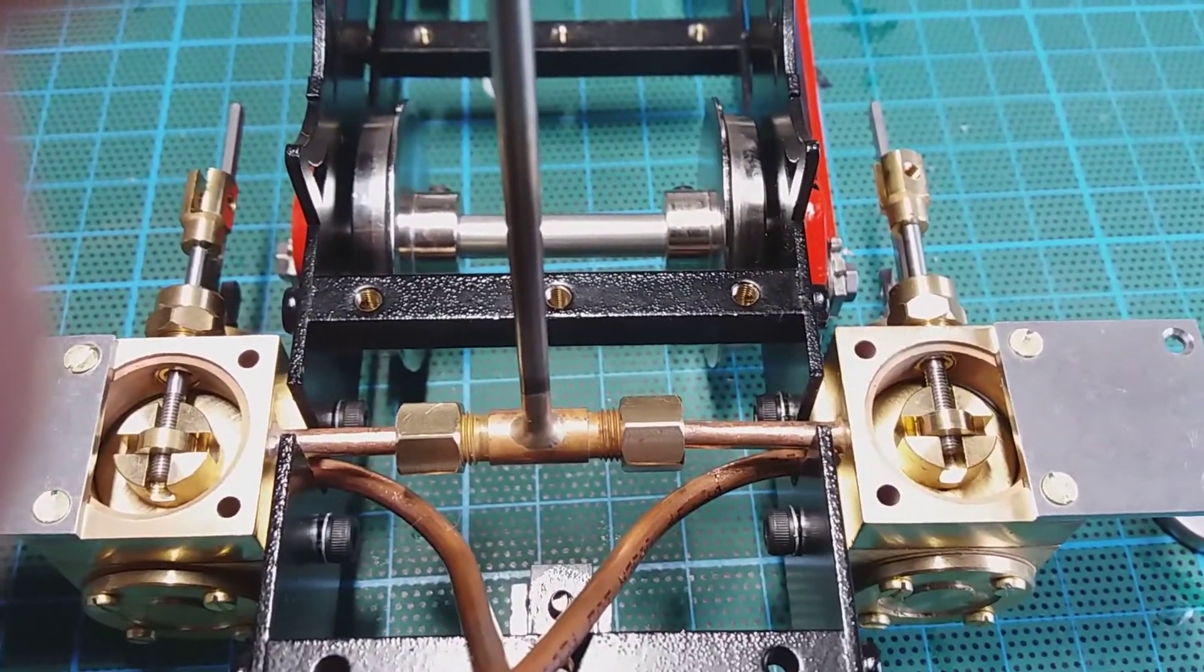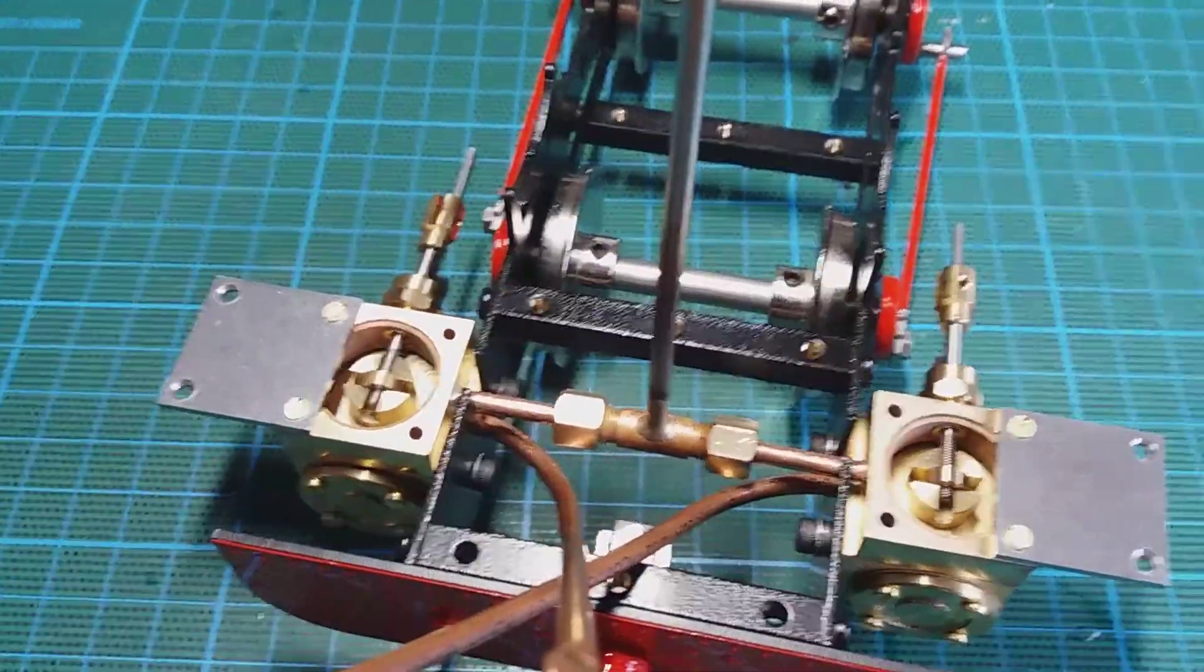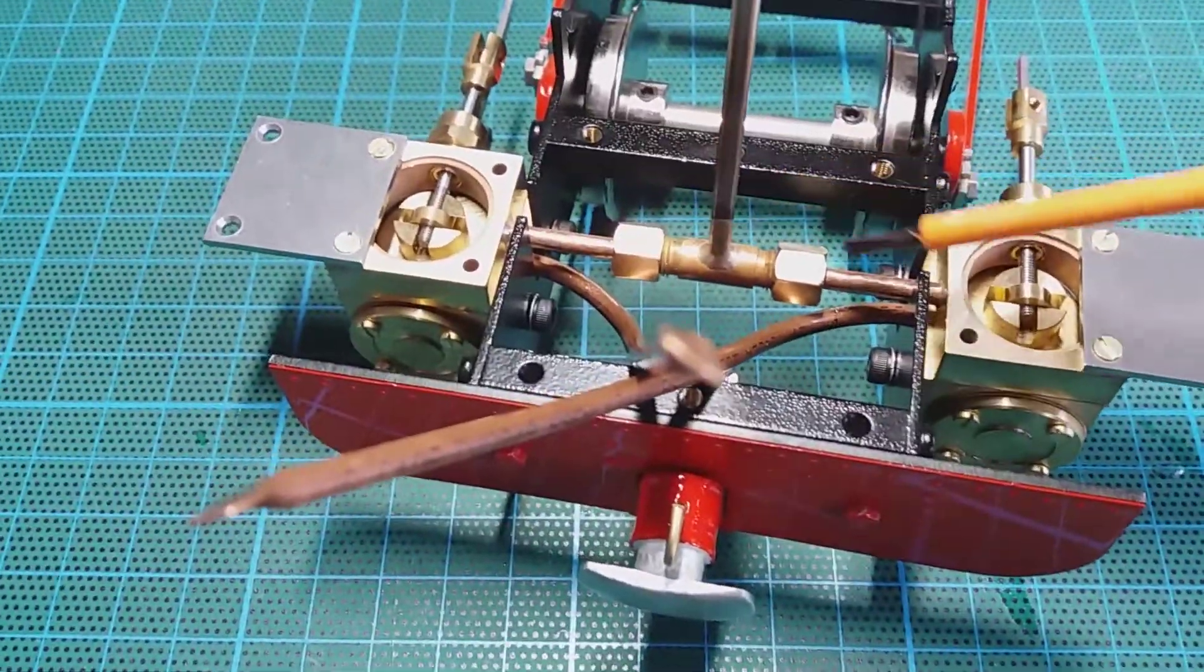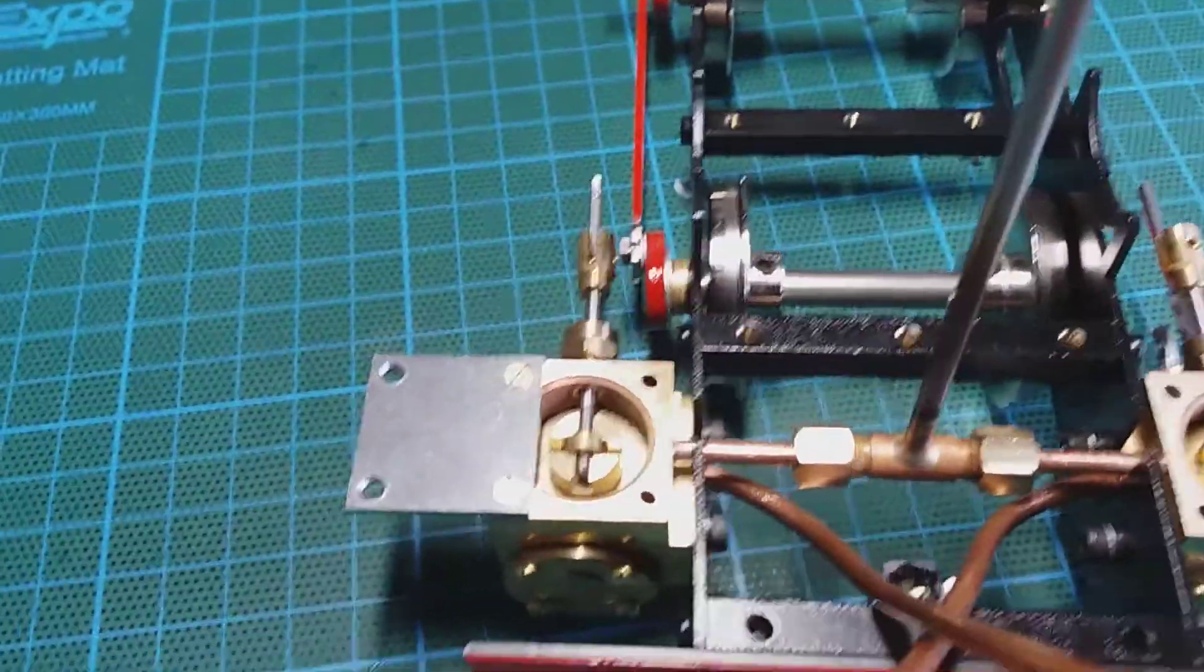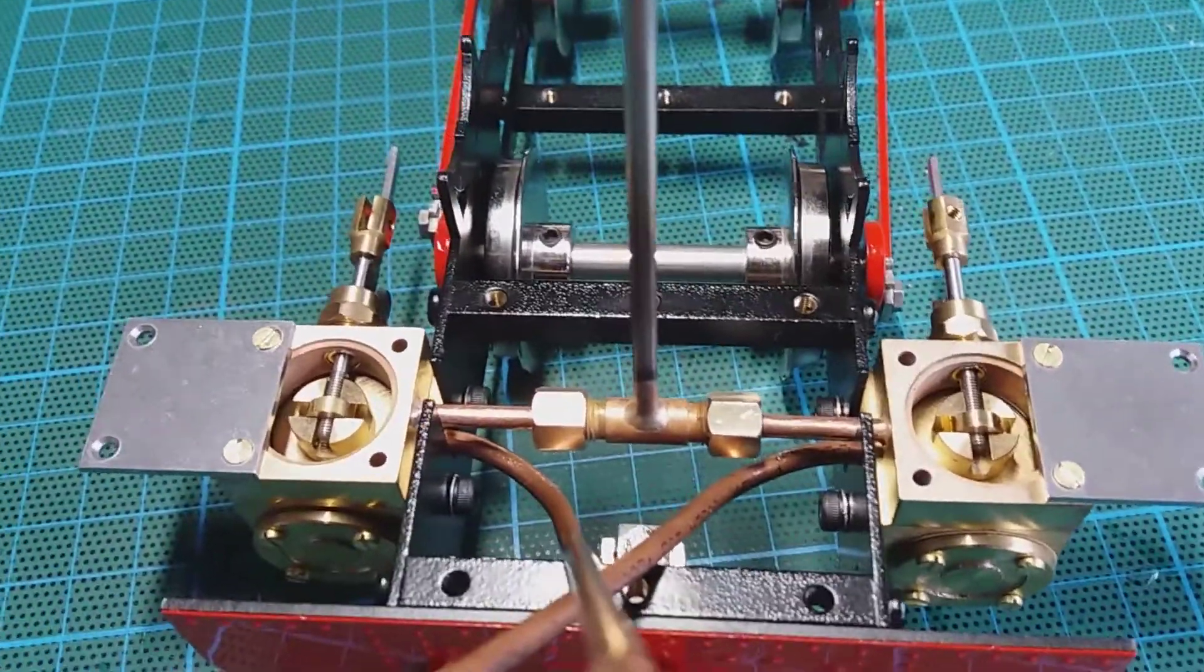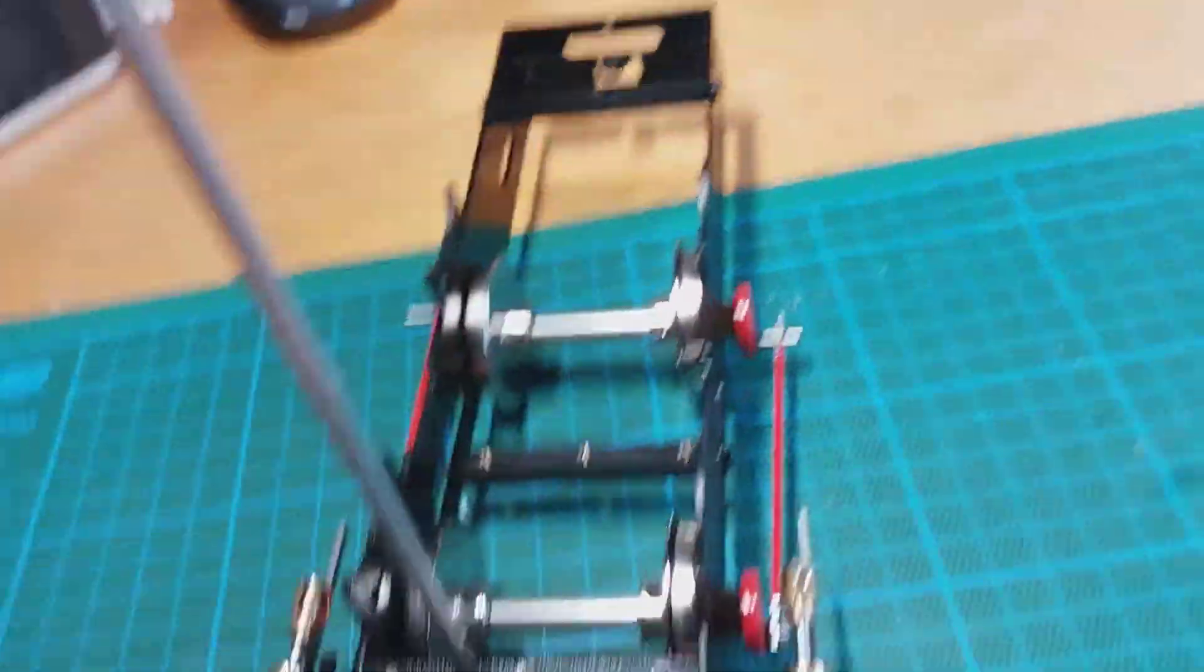I've tightened both the union nuts up now. The superheater pipe is in the middle and it's pointing straight up. Now we're going to crack on and fit the connecting rods.